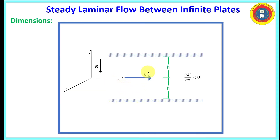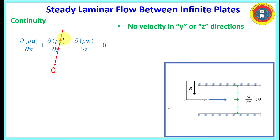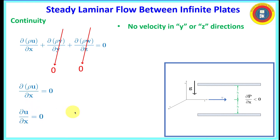The coordinate dimensions: y equals 0 is at the centerline, the distance to the upper plate is h, and the distance to the lower plate is h. Applying the continuity equation with no velocity in y or z, those derivatives are zero, leaving us with du/dx equals zero — in other words, fully developed flow.